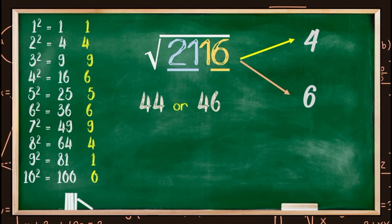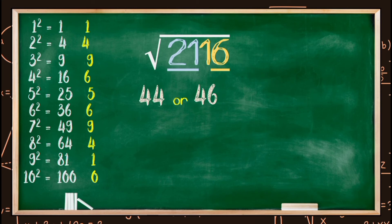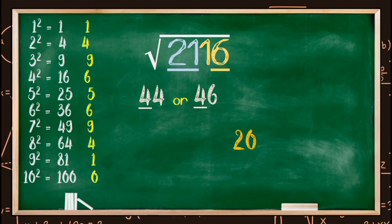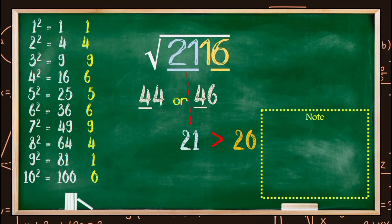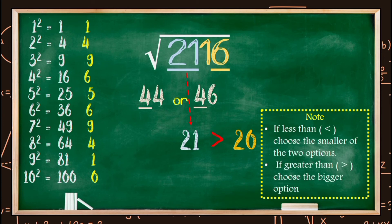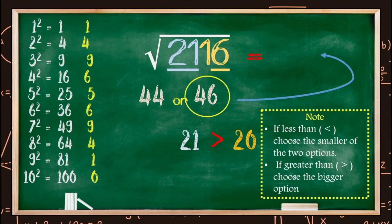Step four: find the exact unit digit. To find the exact unit digit, we consider the tens digit, which is 4, and the next term, which is 5. We multiply these two terms: 4 times 5 equals 20. Since 21 is greater than 20, the square root of 2116 will be the bigger of the two options, and that is 46. The square root of 2116 is 46.